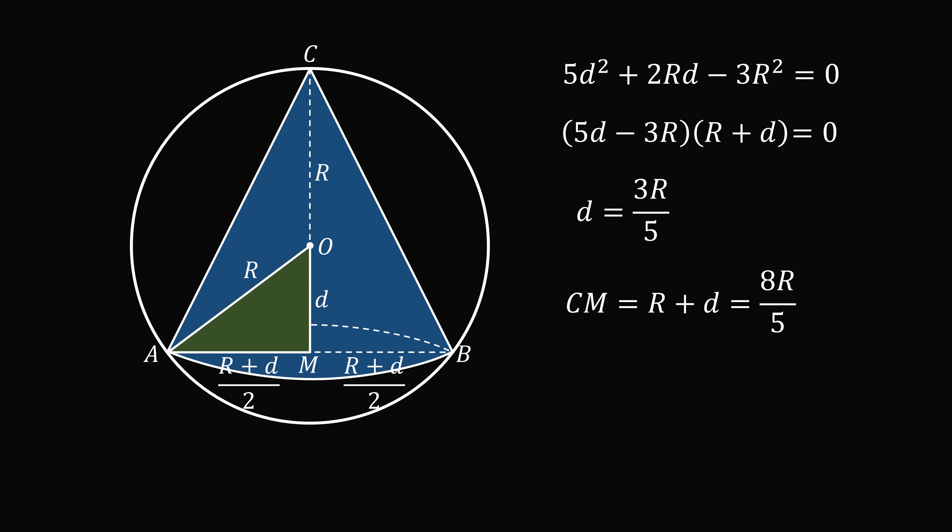From here, CM is equal to R plus d, and that will be 8R over 5. Then AM is equal to half of that, so that will be equal to 4R over 5. We have now solved for the height and the radius of the cone.